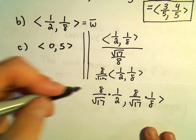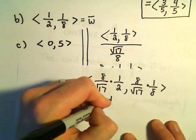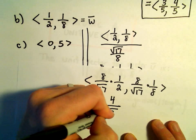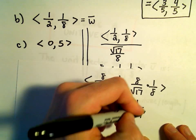And, well, we can always simplify a little bit. So, 8 over 2 will be 4 over root 17. 8 over 8 is just 1, so we'll have 1 over root 17.